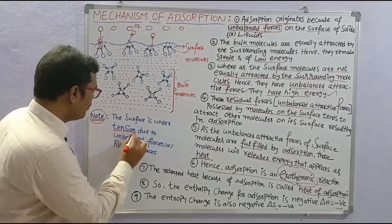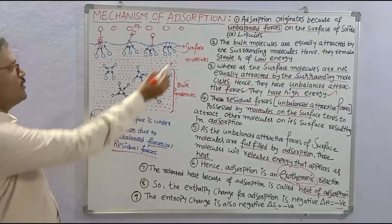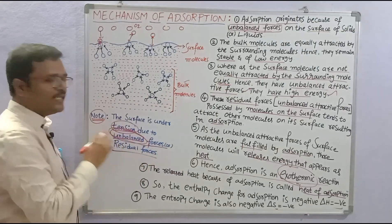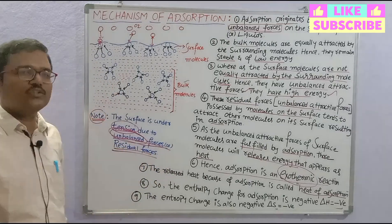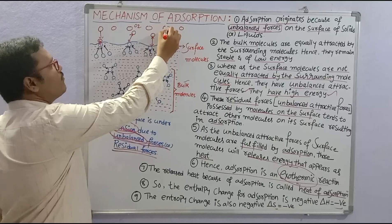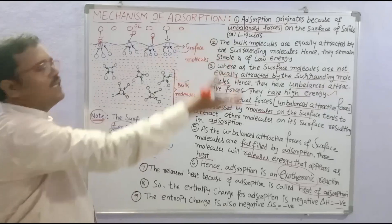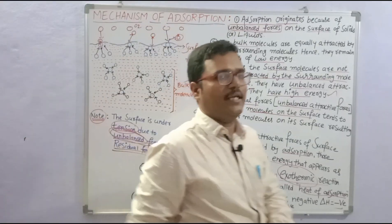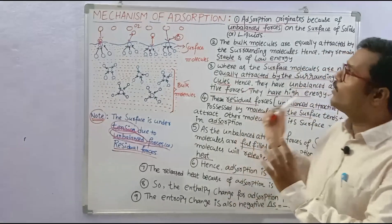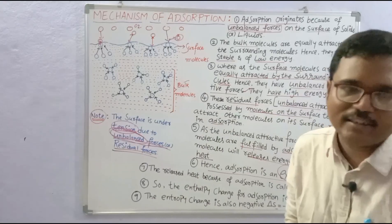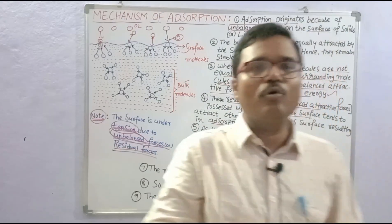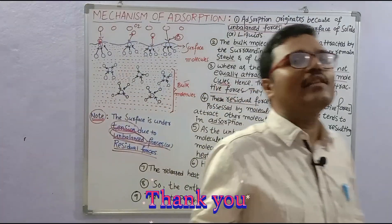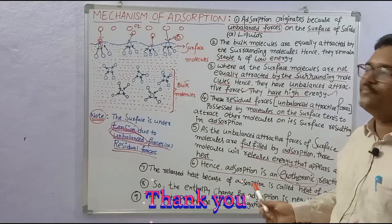The surface is under tension due to unbalanced forces or residual forces — the surface molecules have high energy because their attraction forces are not equal on all sides. That is the mechanism for the adsorption process, which is both a spontaneous and an exothermic reaction. The adsorption is due to unbalanced forces possessed by the surface molecules, whereas the bulk molecules are equally balanced on all sides by their constituent molecules. Thank you for watching.